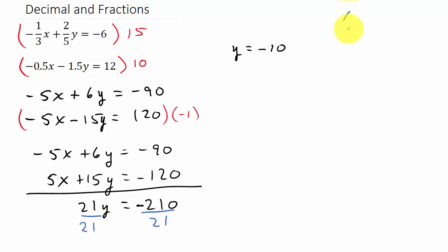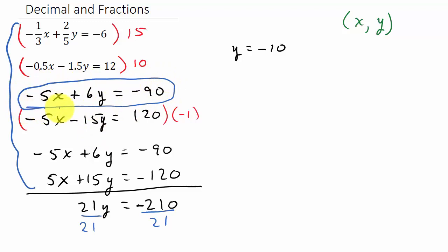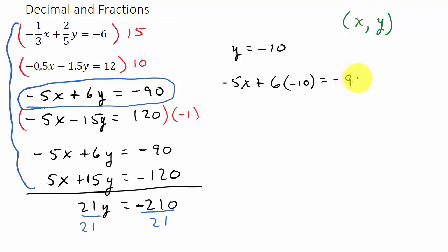Remember, we have to write our solution in the form (x, y). I have y, so I need to get x. I can take the negative 10 and plug it back into any one of the equations. I'm not going to plug it into one with fractions or decimals, so I'll use the cleared equation with the smallest numbers. Let's plug negative 10 in for y: negative 5x plus 6 times negative 10 equals negative 90.